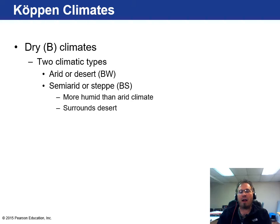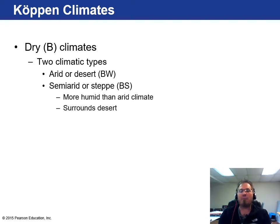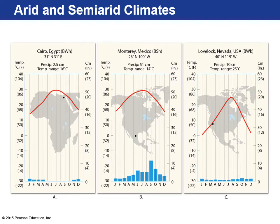There are two types of dry climates: arid or desert, and semi-arid or steppe. The steppe is more humid and typically outlines the desert itself. In a nutshell, the desert is the sand, the dunes, the super hot classic desert landscape. On the outside of that you still get an arid climate, but with enough moisture to sustain grasslands, though it's still very hot and dry.